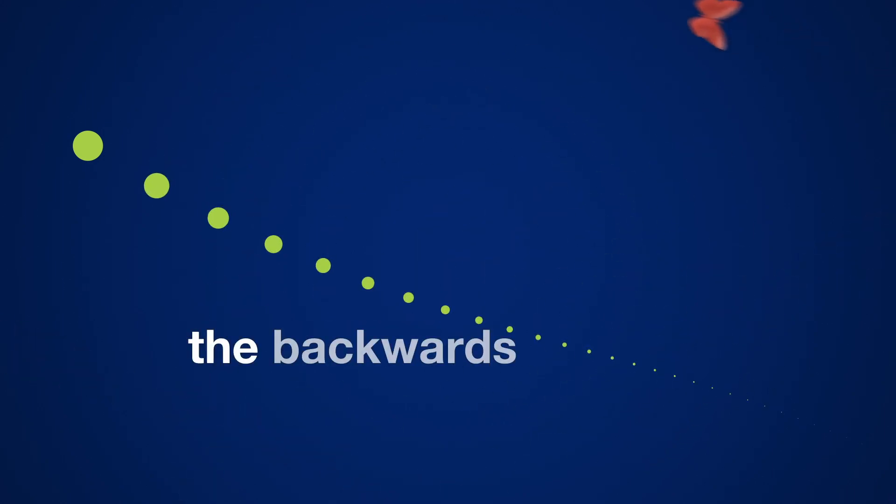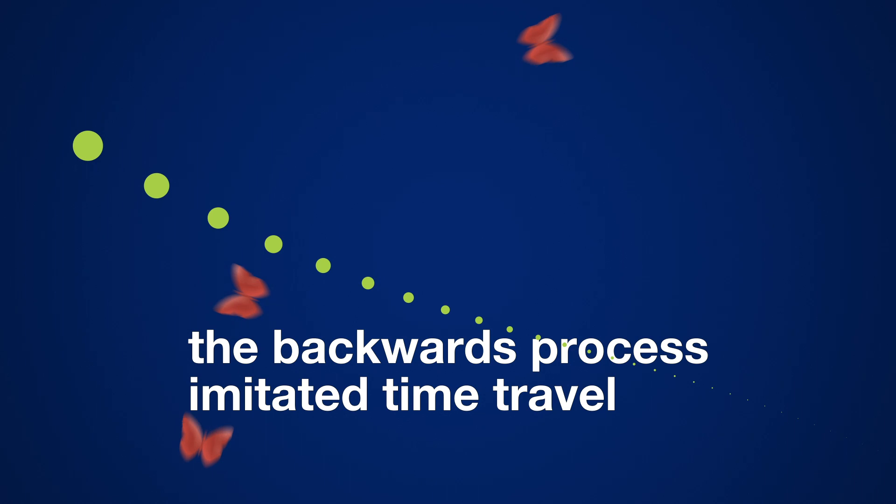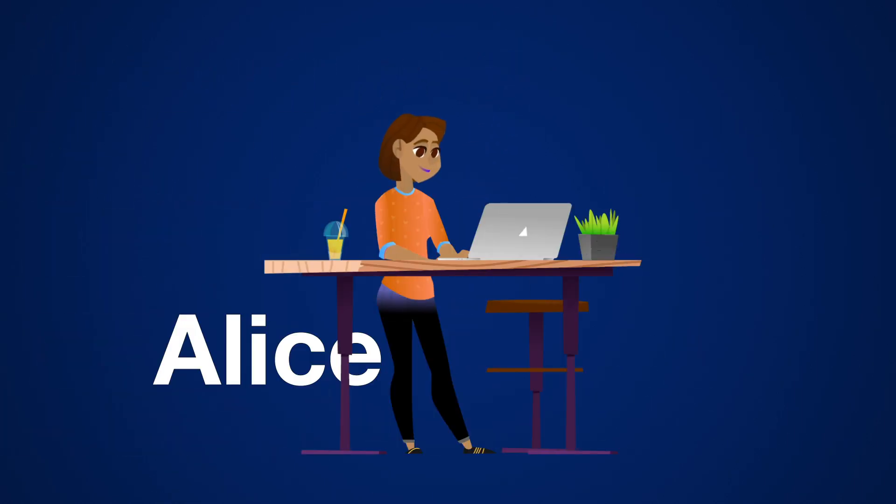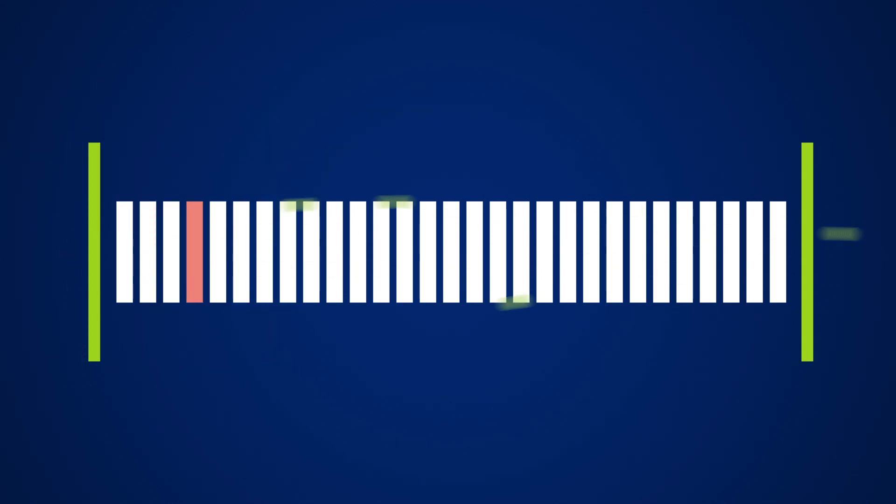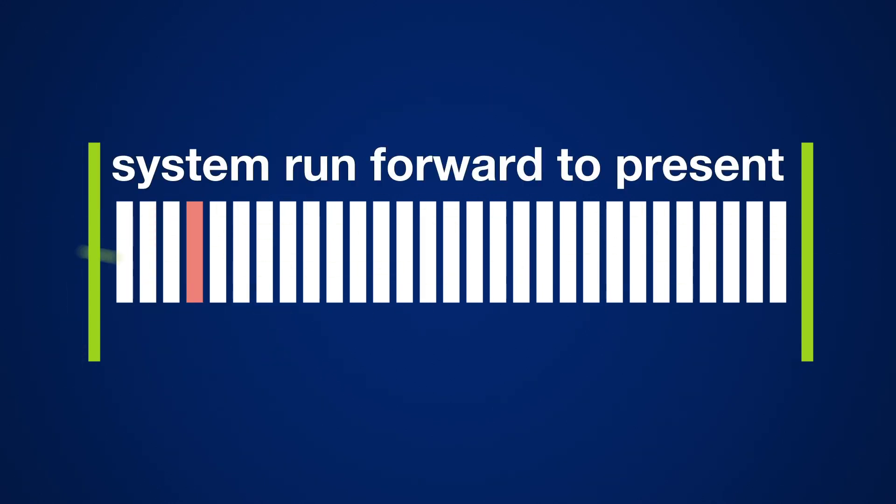In the experiment, the backwards process imitated time travel to the past. Here's how it worked. An imaginary physicist named Alice prepared qubits in the present and ran them backwards through a quantum computer. Bob went into the past to change this piece of information. Then the system was run forward through the gates, back to the present.